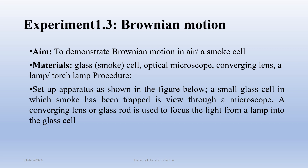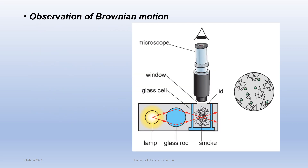Procedure: Set up the apparatus as shown in the figure below. A small glass cell in which smoke has been trapped is viewed through a microscope. A converging lens or glass rod is used to focus the light from a lamp into the glass cell.